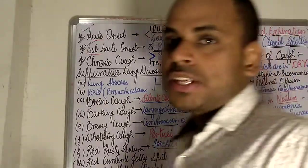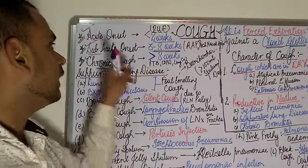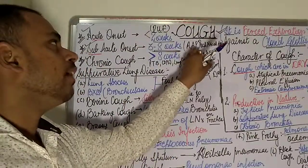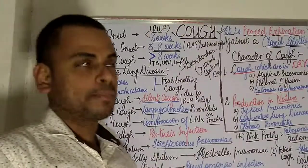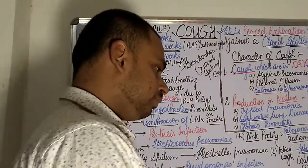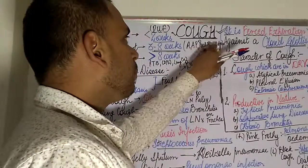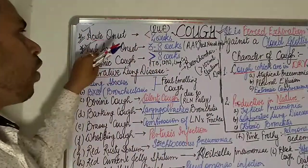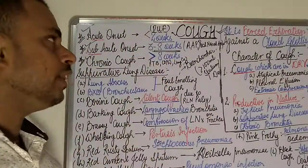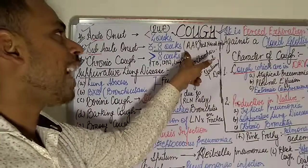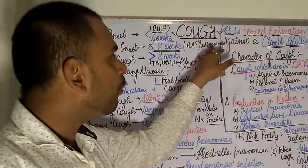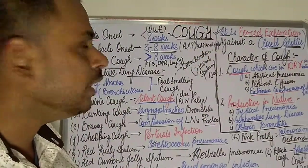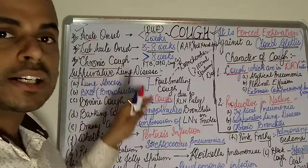Moving on to cough of subacute onset, the mnemonic is AAP and post nasal drip — that is asthma, atypical pneumonia, and post nasal drip — where the duration of cough is between three to eight weeks.